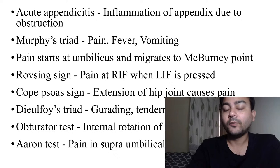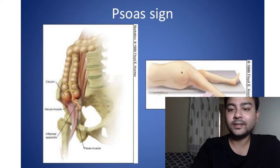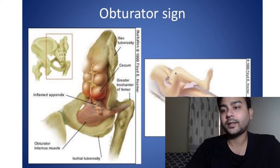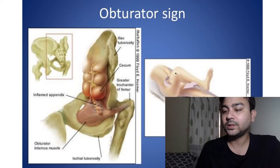Aaron's sign: there will be pain in the supra-umbilical area when the right iliac fossa is pressed. To recap visually: psoas sign — extending the hip joint causes pain in the right iliac fossa due to the inflamed appendix. Obturator sign — flexion or internal rotation at the hip joint also causes right iliac fossa pain. Both are seen in acute appendicitis.